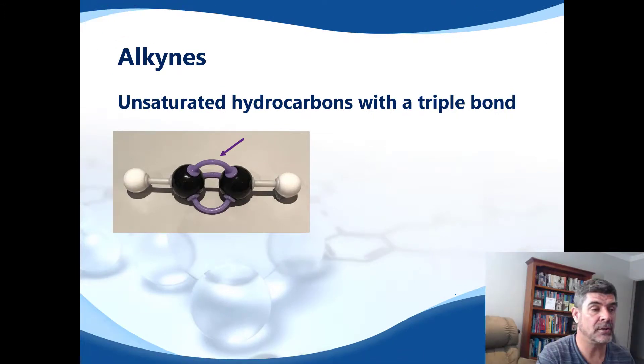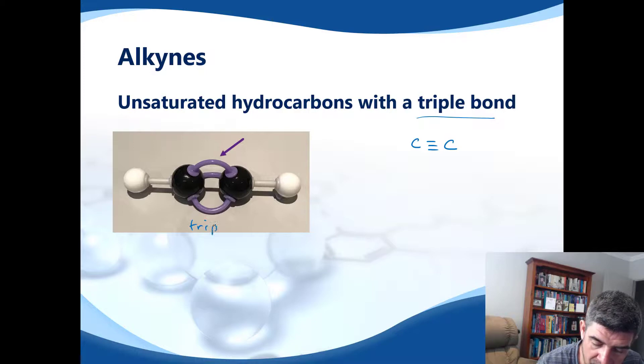The final group that we need to look at are the alkynes, and they are characterized by a triple bond. So where we have carbons, we have a triple bond between the two carbons. And you can see that here is a triple bond between the two carbons in this particular compound.